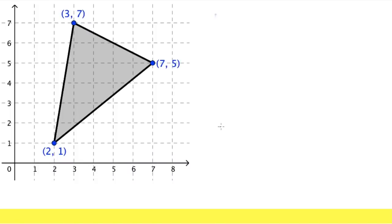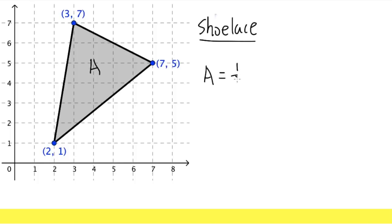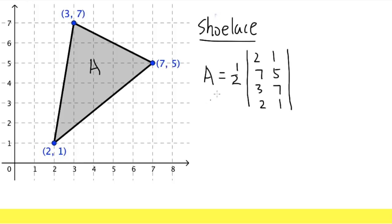For the fourth method, this is actually really similar to the matrix determinant, but it has its own name — this is called the Shoelace theorem. It works even if you have more points. Here's how it works: the area equals one-half times the absolute value. You pick a point — let's say (2, 1) — and going counterclockwise you write (7, 5), then (3, 7), then you go back to the original (2, 1).